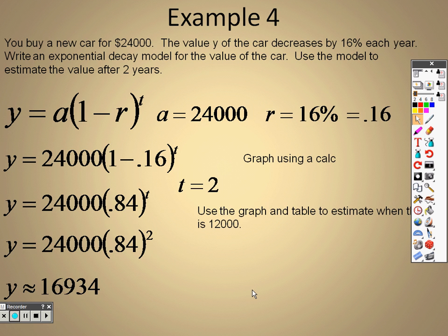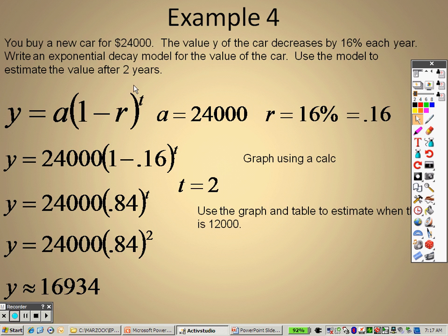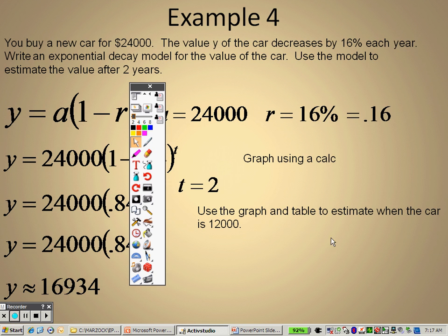So you can use your graphing calculator, and it says use the calculator and use the table to estimate when the car will be $12,000. So what that means is I want you to go to your graphing calculator. So go to y equals, type in 24, 1, 2, 3, so zeros because it's 24,000, parentheses 0.84, end parentheses, caret sign, x.